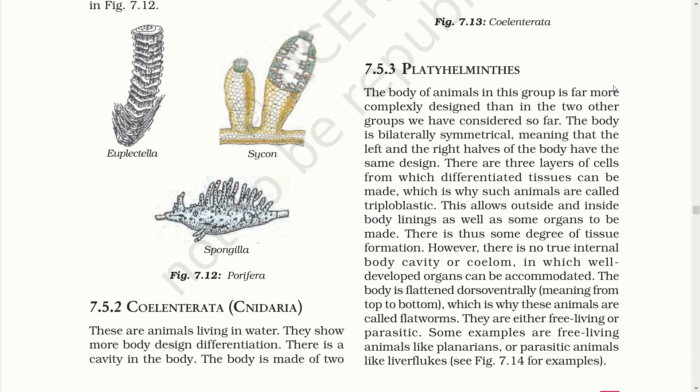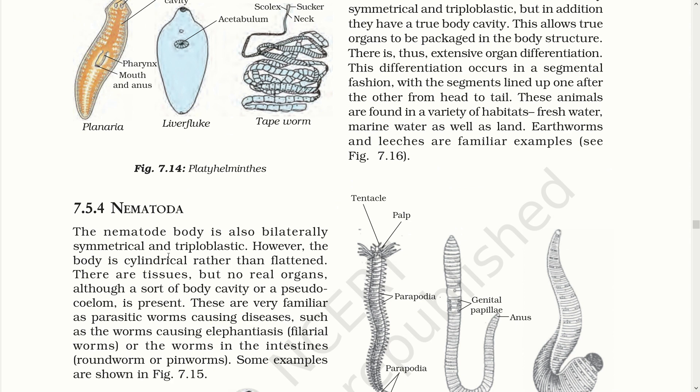Platyhelminthes has a bilaterally symmetrical body and a triploblastic tissue system, meaning three layers of cells that differentiate the tissue system. Nematoda — the nematode body is also bilaterally symmetrical and triploblastic. However, the body is cylindrical rather than flattened. There are tissues but no real organs, although a sort of body cavity or pseudocoelom is present. These are very familiar as parasitic worms causing diseases such as elephantiasis or intestinal worms.